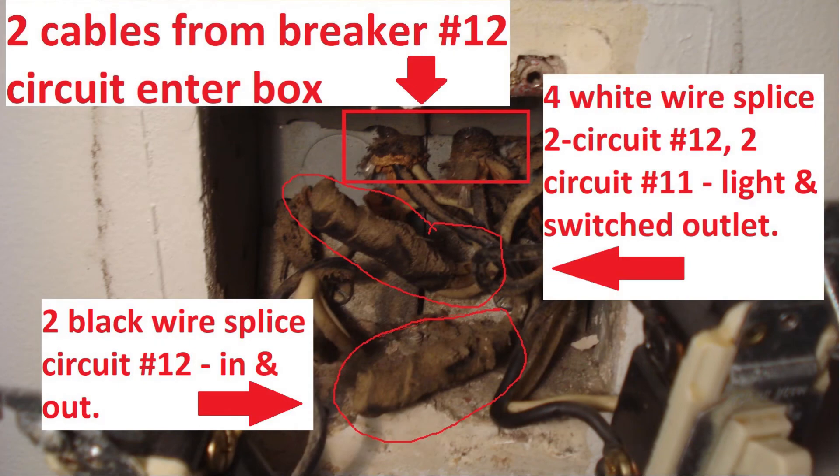At the top center of the photo you'll see where the two cables that are connected to breaker number 12 enter the switch box. In the center of the photo four white neutral wires are spliced together. Two are the in and out for breaker 12 circuit.